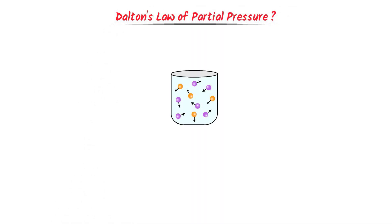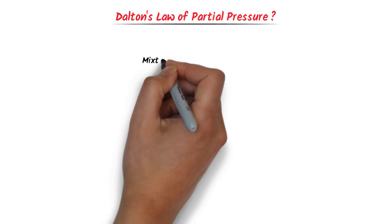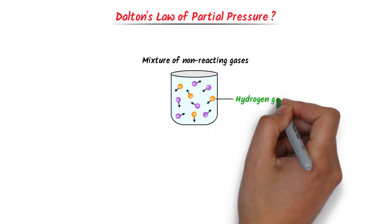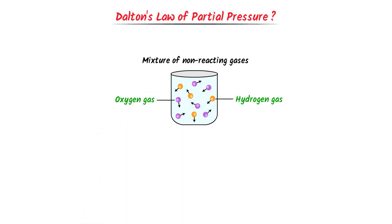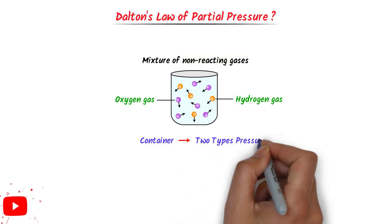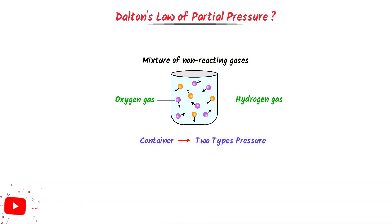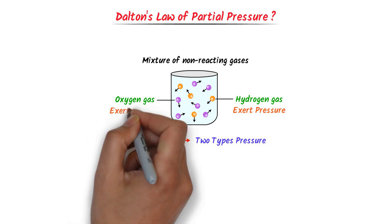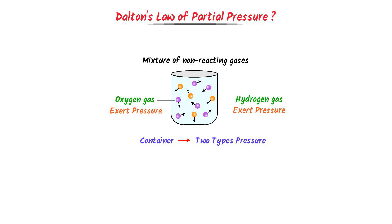Now, what is Dalton's Law of Partial Pressure? Consider this container — it contains a mixture of non-reacting gases like hydrogen gas and oxygen gas. Remember that I use the word non-reacting gases, meaning hydrogen gas and oxygen gas do not react with each other. Now, this container experiences two types of pressure: the molecules of hydrogen gas exert pressure on the walls of the container, and secondly, the molecules of oxygen gas also exert pressure on the wall of the container.